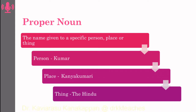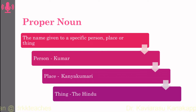As in, Kumar is a name of a person, Kanyakumari is a name of a place, and The Hindu is the name of a newspaper — it is a thing. So this proper noun is always capitalized; wherever this proper noun comes, the first letter is capitalized. So it is an exception of the rule of capitalization.